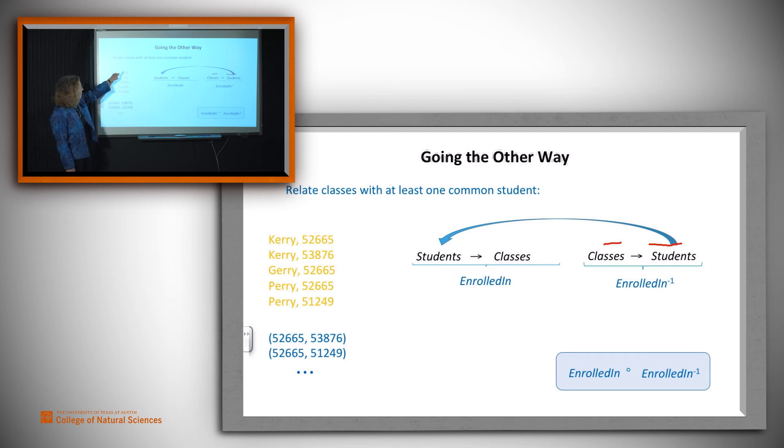So 52665 relates to Cary, and then using the inverse, Cary relates to 53876. So 52665 relates to 53876, and so forth.